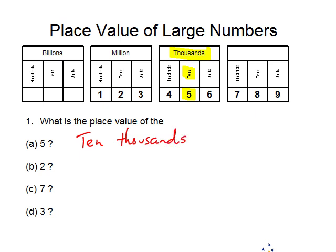The place value of the 2 is 2 ten millions. The place value of the 7 is simply 7 hundreds.